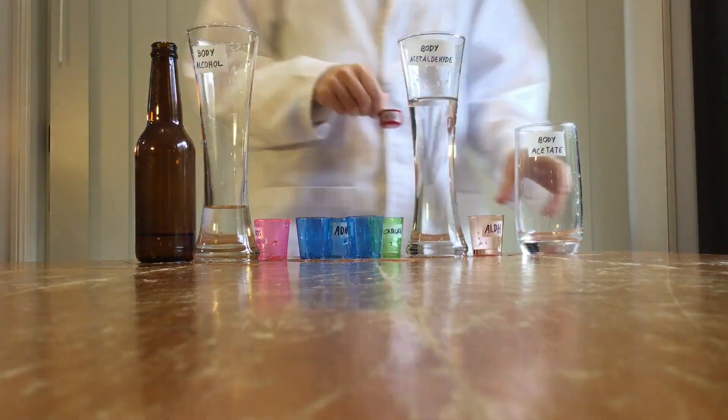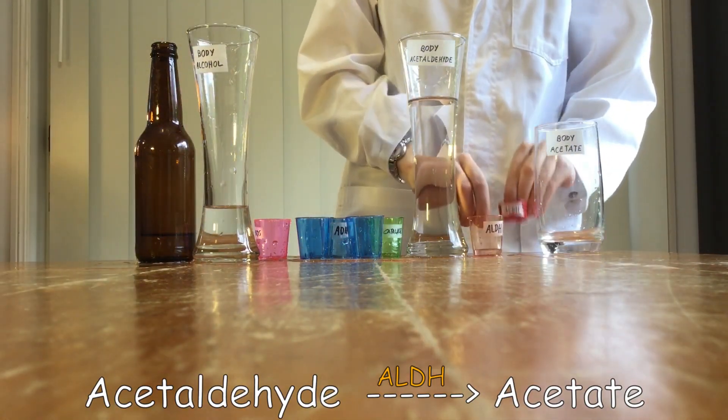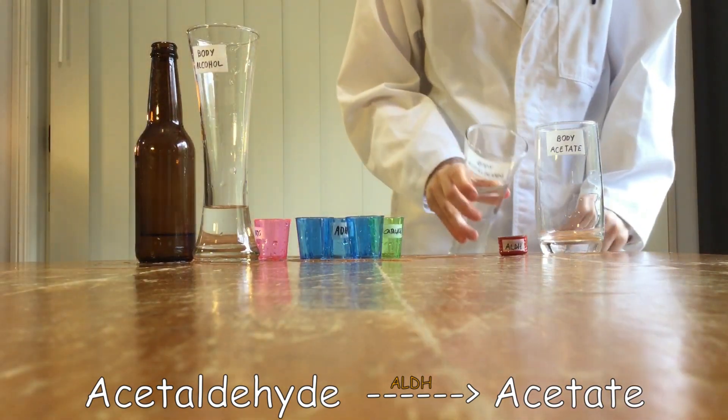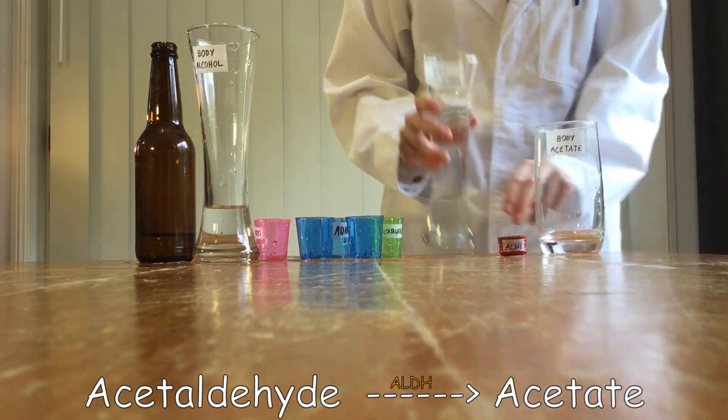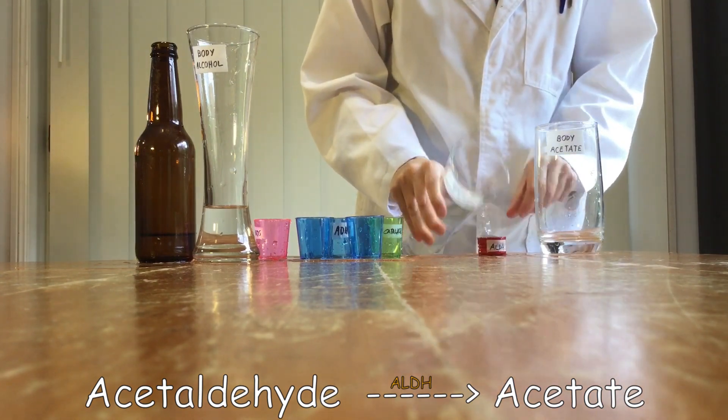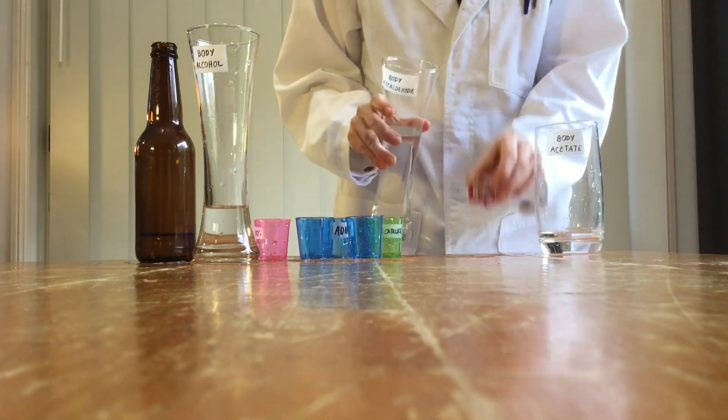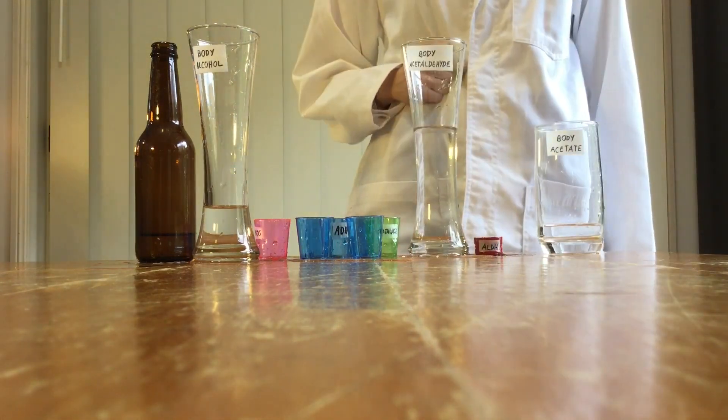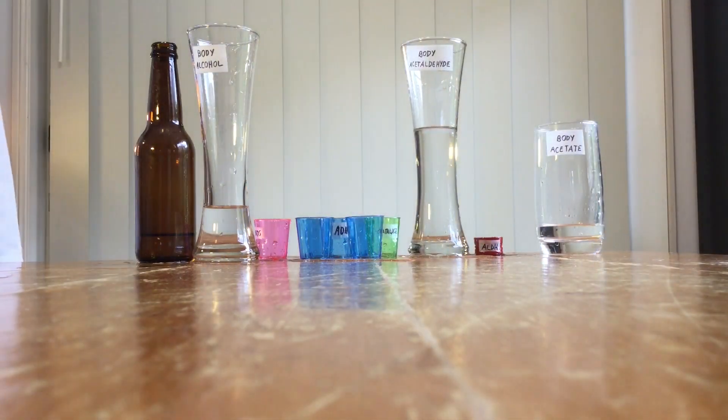If you have a gene that doesn't make much ALDH, this limits how quickly the body can process the toxic acetaldehyde, and you're probably going to feel terrible tomorrow. If you drink heaps of alcohol in one go and have a constant flow of acetaldehyde trickling through your system, you're probably going to feel terrible tomorrow.